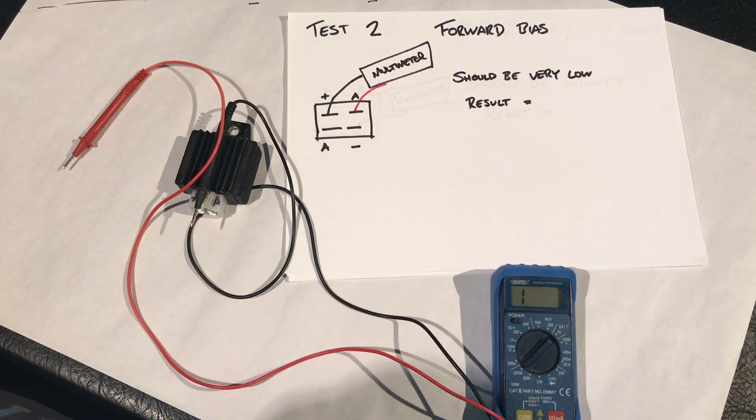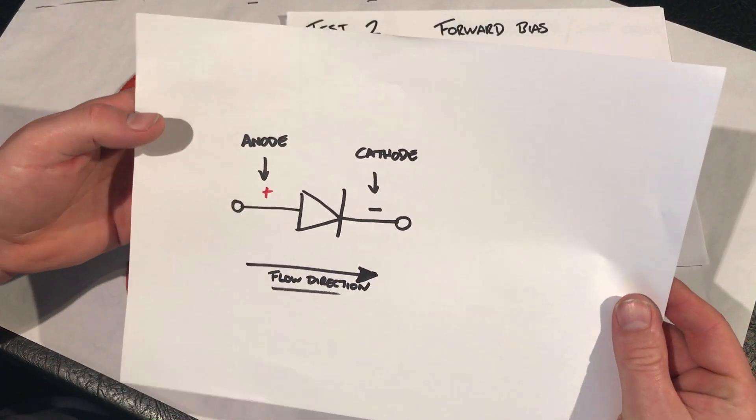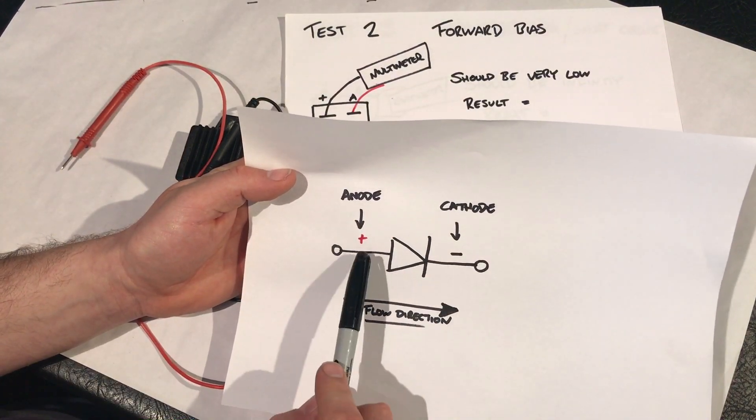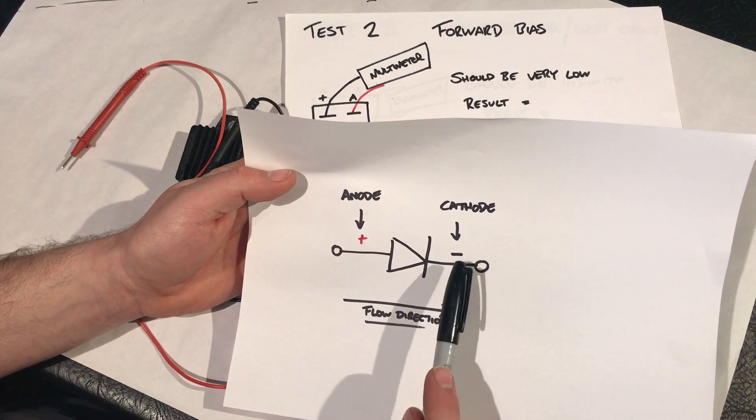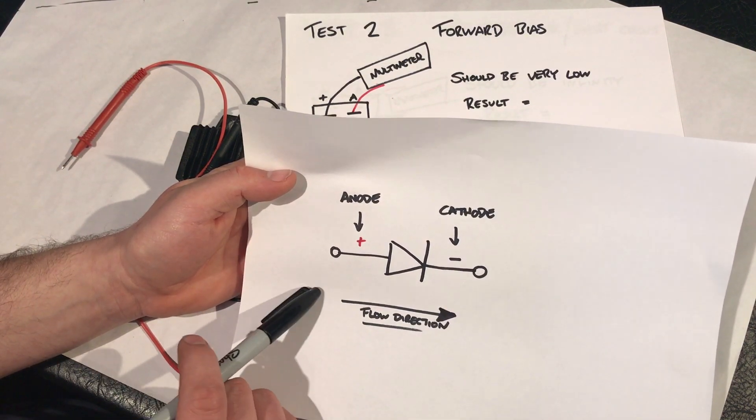Okay, and just a quick diagram of a diode, which I've just drew a few minutes ago. As you can see there, you have your diode here. This is your diode symbol. Your positive, which is known as the anode, the negative, which is known as the cathode, and the flow direction is that way.